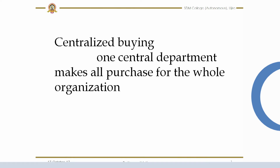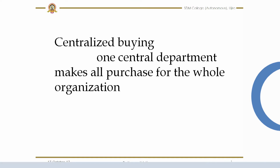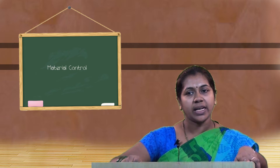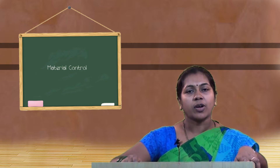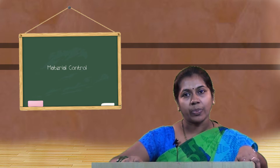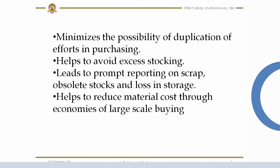Centralized buying is a system in which one central department makes all purchases for the whole organization. Its advantages include: it helps in consolidation of orders of materials commonly used by two or more departments; it helps maintain a uniform and firm buying policy; it facilitates maintaining one complete set of records for purchase transactions; it minimizes the possibility of duplication of efforts in purchasing; it helps to avoid excess stocking; it leads to prompt reporting on scrap, obsolete stocks, and loss in storage; and it helps reduce material cost through economies of large-scale buying performed by specialized staff.